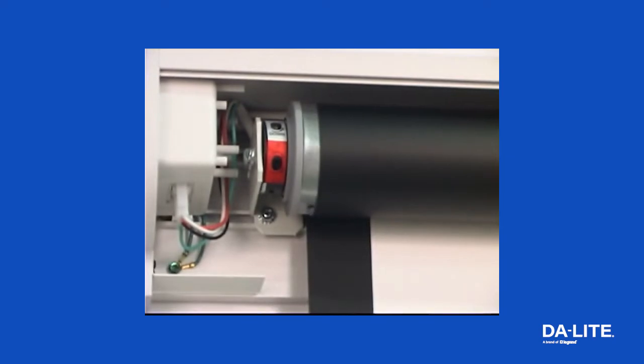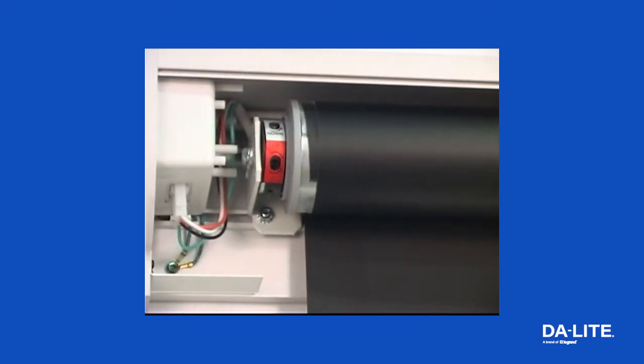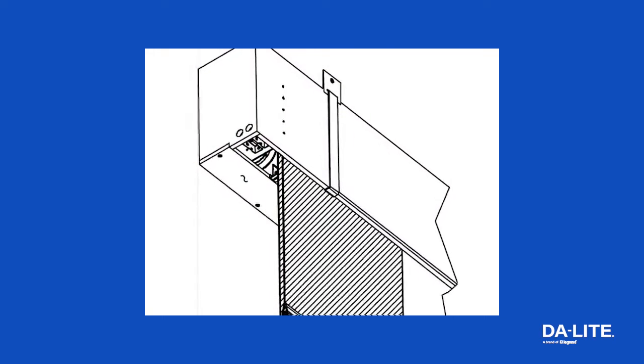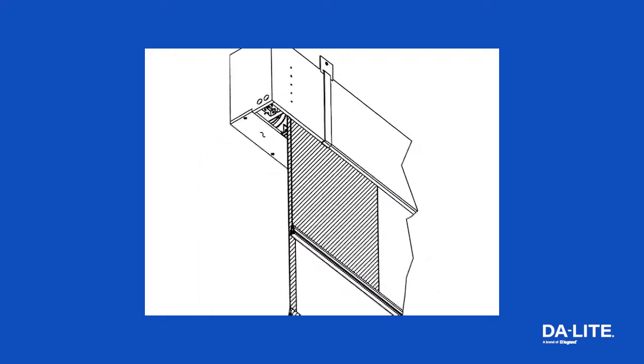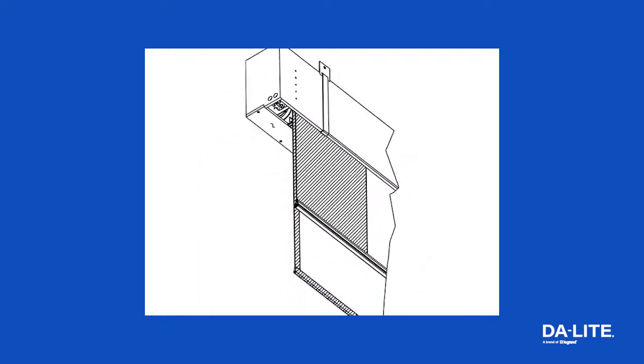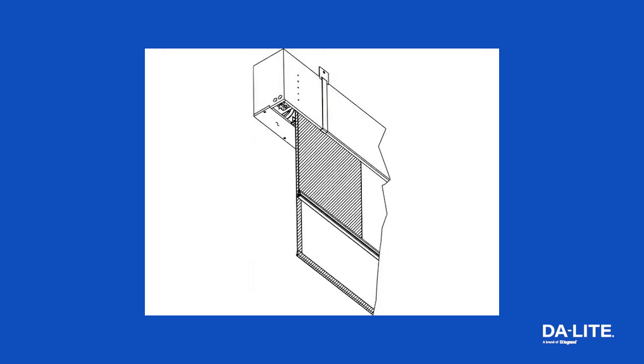The screen surface on a typical screen will unroll from the back of the roller. If your screen unrolls from the front of the roller, you may have a masking screen or a custom product. If this is the case, please contact one of our sales partners for assistance in adjusting your screen limits.